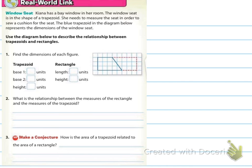Use the diagram below to describe the relationship between trapezoids and rectangles. And so here they give us a picture, and remember in the last video that I told you there are a lot of different shapes of trapezoids? Because the only defining rule of a trapezoid is that it has two sides that are parallel, and the other ones don't have to be parallel or perpendicular or any kind of angle from each other.